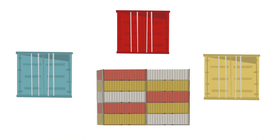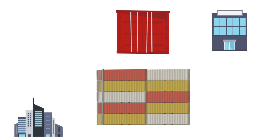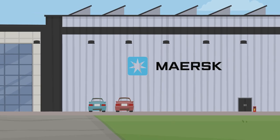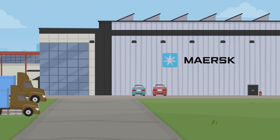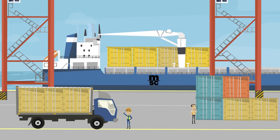But why the different colors? It turns out, the color of a container can indicate which shipping company it belongs to. For example, Maersk, one of the largest shipping companies in the world, uses blue containers, while Mediterranean Shipping Company, or MSC, uses yellow containers.